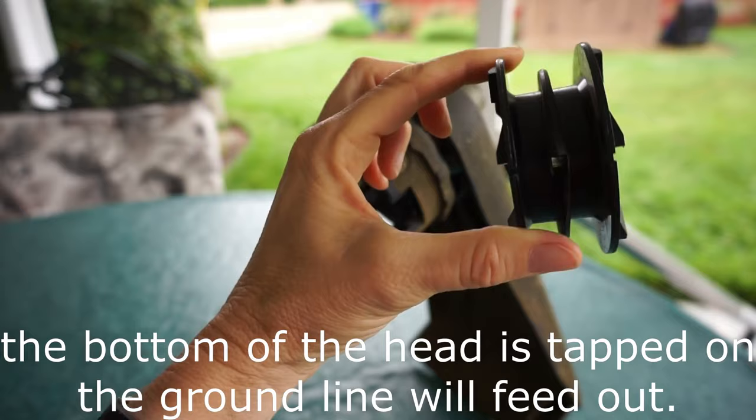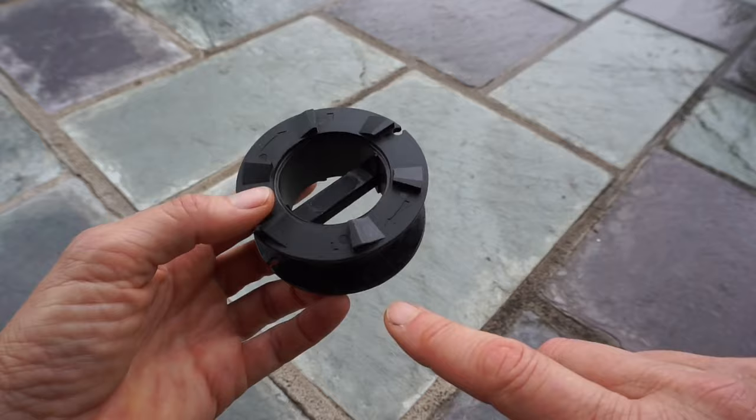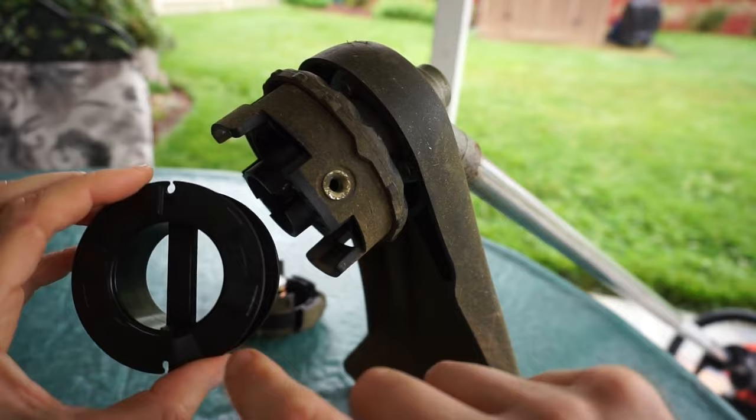If you've been doing this the hard way and had the trimmer head apart, ensure that the spool is correctly installed. You'll find an L on the spool. Ensure that the L side faces the ground.